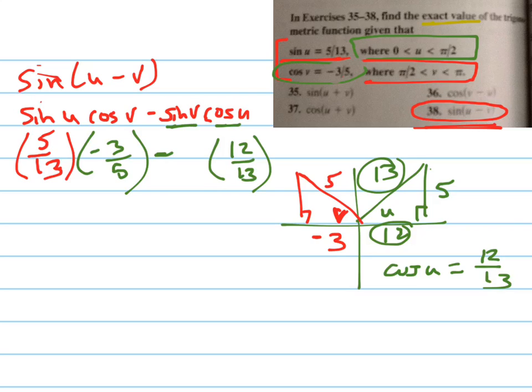And so the opposite side, is this going to be a positive or a negative four? It's going to be a positive four because it's in the second quadrant, which means it's going up. And so my sine of v equals 4 fifths. I can plug that in right here.